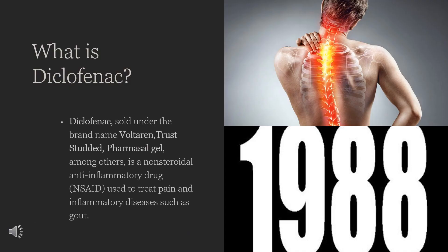What is Diclofenac? Diclofenac, sold under the brand names Voltaren, Traust Studded, Pharmacel Gel, among others, is a non-steroidal anti-inflammatory drug (NSAID) used to treat pain and inflammatory diseases such as gout. Diclofenac was patented in 1965 and it came into medical use in the United States in 1988.